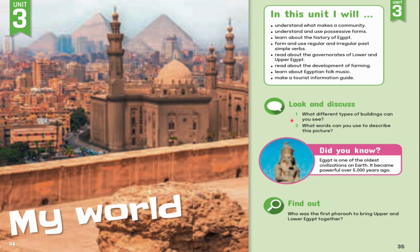Look and discuss. 1. What different types of buildings can you see? 2. What words can you use to describe this picture? Did you know that Egypt is one of the oldest civilizations on Earth? It became powerful over 5,000 years ago. 3. Find out who was the first pharaoh to bring Upper and Lower Egypt together.